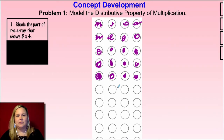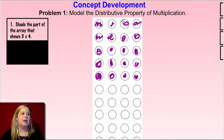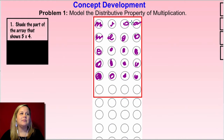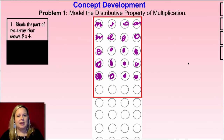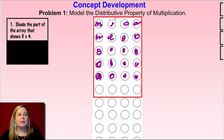Now that we've shaded in five times four, I want you to make a box around the part of the array that would show five times four plus one times four. We already have five times four — don't use the first row as your one times four, you have to add on to that five times four. So I have my five times four and then my one times four there at the bottom. That whole box is six times four, because now I have six rows with four in each one.